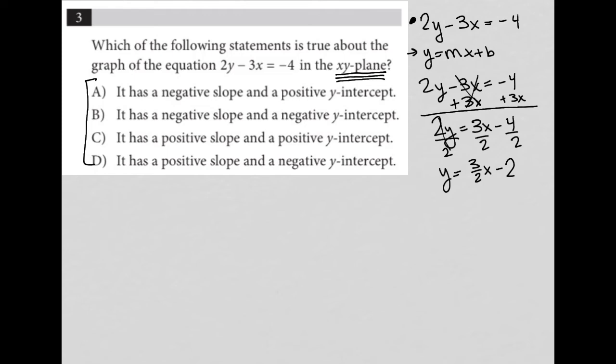So choice A says it has a negative slope and a positive y-intercept. Oh, okay, well, I can tell that just by looking at my equation. I know that my slope, which is this portion here, is positive. And I know that my y-intercept, which is this negative 2 here, is negative. So A is not right because it's the reverse, basically.